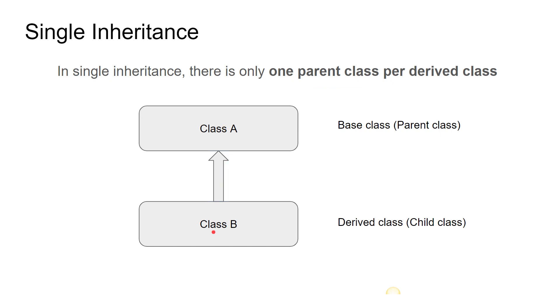So if class B has only one parent class, then it is called single inheritance — one parent class per derived class. Class A is called the base class, parent class, or super class.